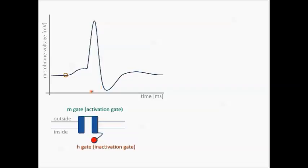One gate is depicted as a green trap door facing the outside of the cell. This gate is called the activation or M gate and it is responsible for the quick opening of the channel, allowing the rapid flow of sodium that causes the quick depolarization of the membrane potential at the start of the action potential. The second gate is called the inactivation or H gate, depicted here in red as a chain with a ball that faces the inside of the cell. It is responsible for stopping the sodium flow after the peak of the action potential, permitting the hyperpolarization to occur.